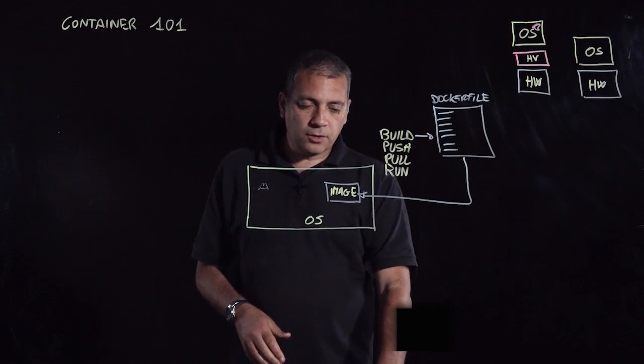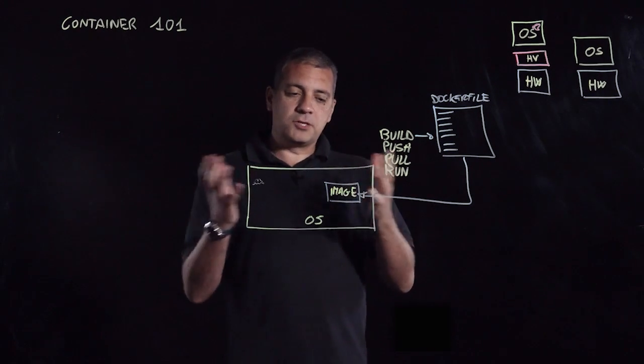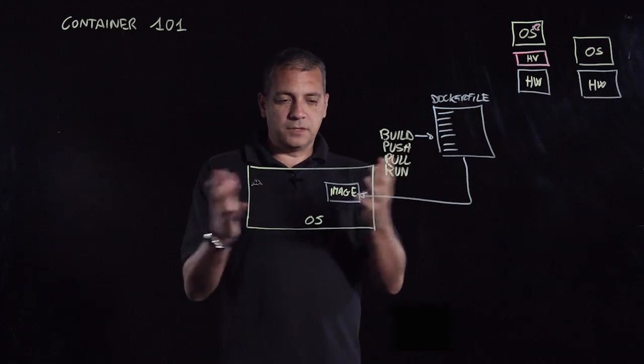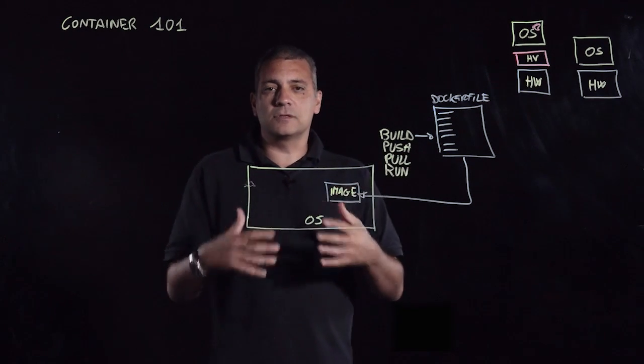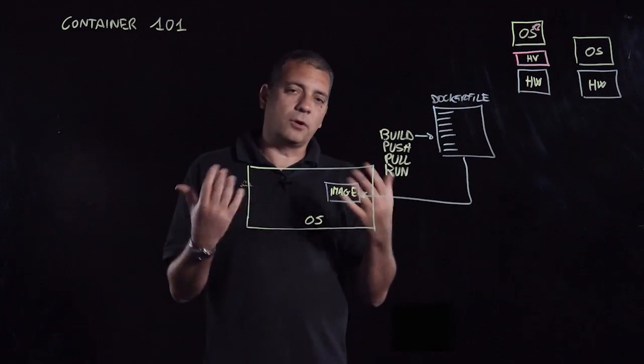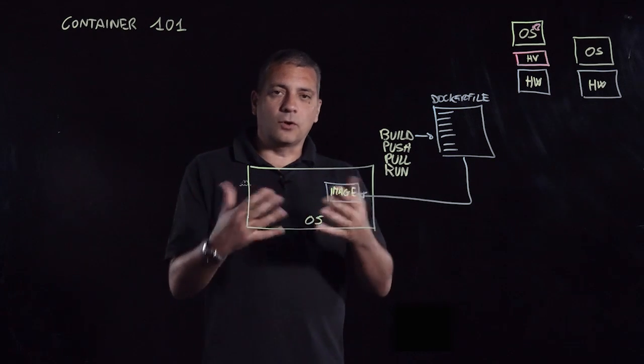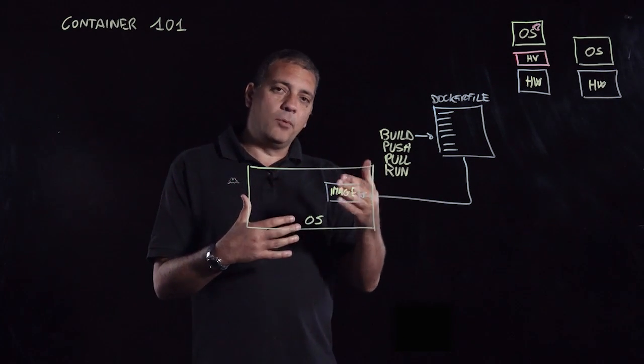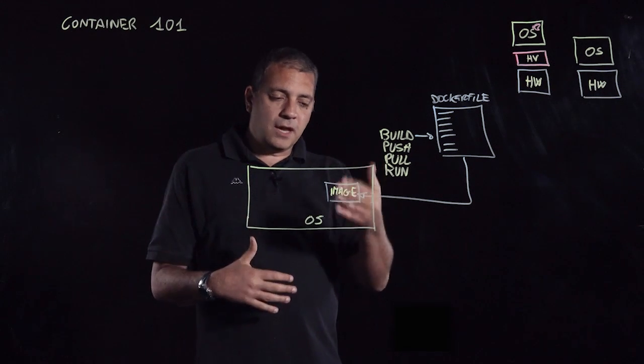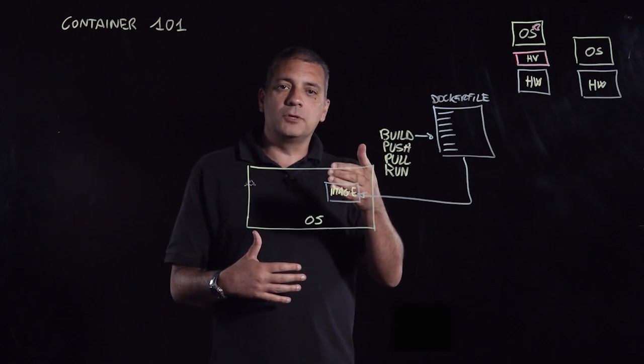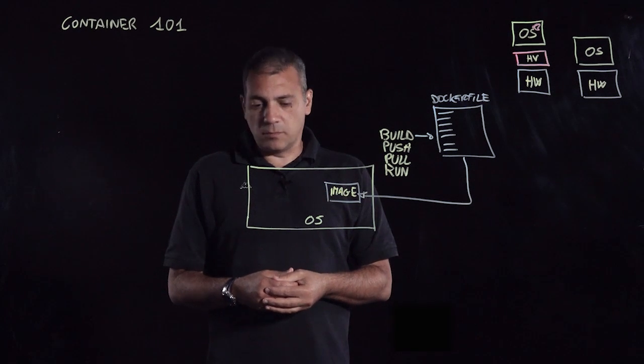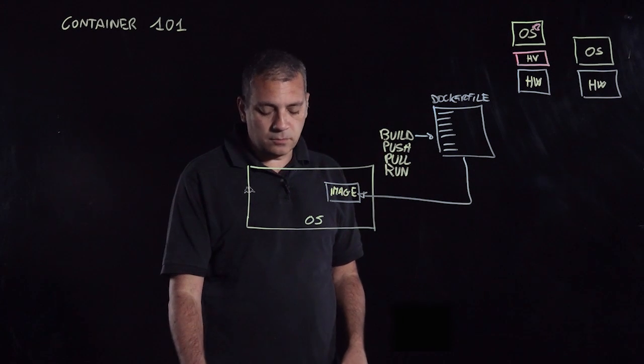Once you have a Docker image, and imagine that you are running on your personal laptop or a single instance of an operating system where Docker is running, Docker being a set of binaries that are running inside this operating system. What you can do at that point is basically you can instantiate that Docker image as a container inside this operating system. So basically this is what the run command allows you to do.